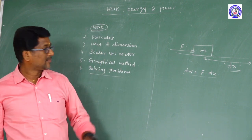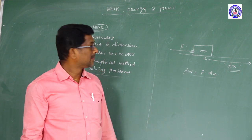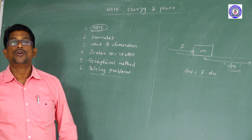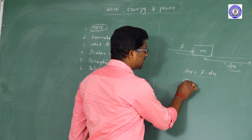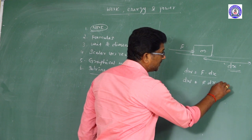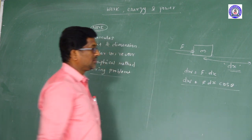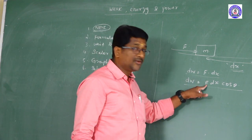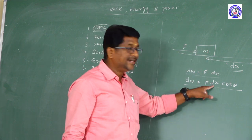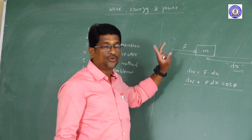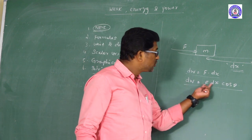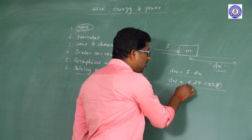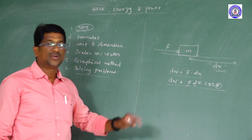This expression dw = F dx is only applicable if the body displaces along the direction of the force applied. Otherwise, the small work done is given by dw = F dx cosθ. Here, dw is the small work done, F is the magnitude of the external applied force, dx is the small displacement of the body due to the force, and θ is the angle between force and the displacement.